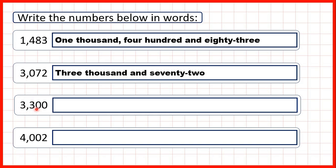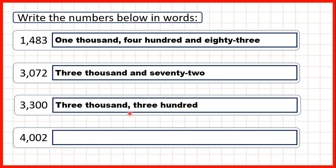Now let's look at this number here. We have three as our thousands digit, so that's three thousand. Then looking at the last three digits, we have three, zero, zero — so that's three hundred. Our number is three thousand three hundred.